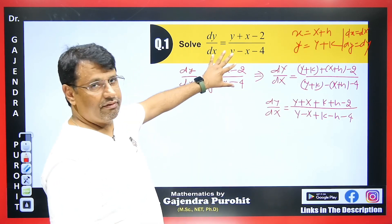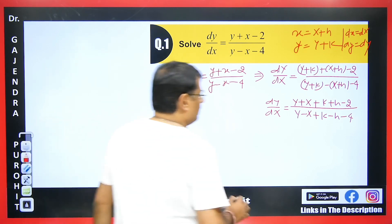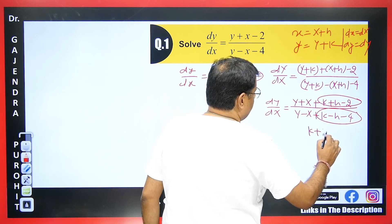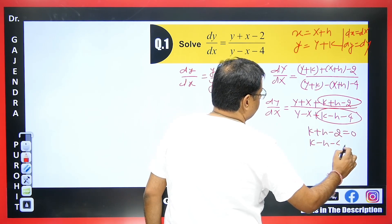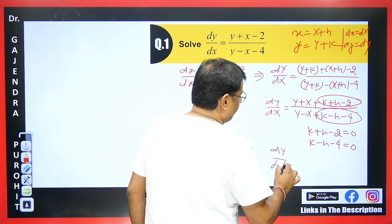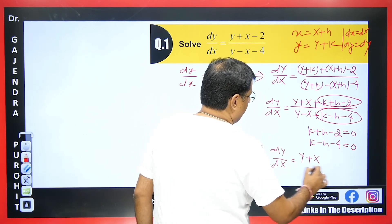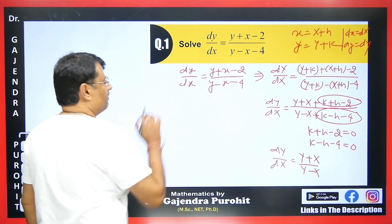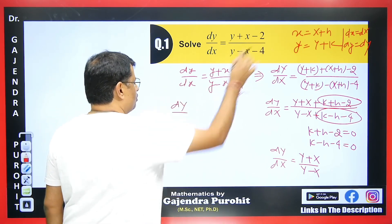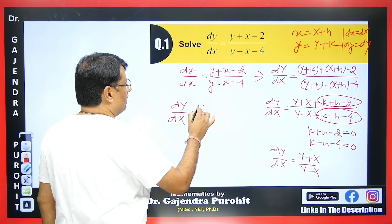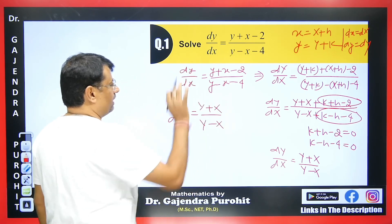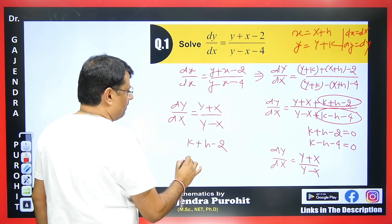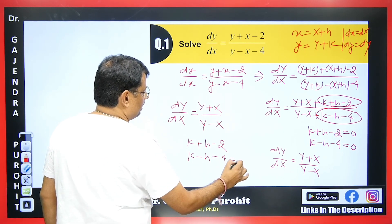To make this homogeneous, you need to set the constant terms to zero: put k + h - 2 = 0 and k - h - 4 = 0. This makes the equation dY/dX = (Y + X) / (Y - X), which is homogeneous. The shortcut is: directly replace small x and y with capital X and Y, then wherever there is a constant involving y replace it with k and x with h, set those terms equal to zero, and it is done.